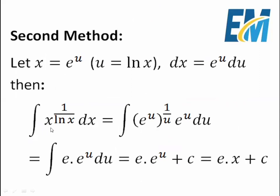Then the integral of x to the power 1 over ln x dx equals the integral of — this x is e to the power u — all to the power 1 over ln x, but ln x equals u. Here dx equals e to the power u du. We have e to the power u, all multiplied by 1 over u, because the powers are next to each other so we multiply them. So u multiplied by 1 over u is 1, so this is e. We get e is a constant, and the integral of e to the power u is e to the power u plus c, but e to the power u is x, so the integral is e multiplied by x plus c.